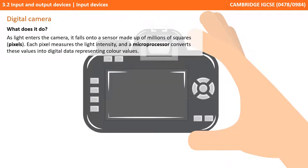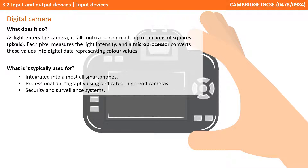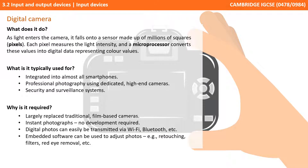Next up, we have digital cameras. As light enters the camera, it falls onto a sensor made up of millions of squares or pixels. Each pixel measures the light intensity, and a microprocessor converts these values into digital data representing colour values. Digital cameras are typically integrated into almost all smartphones, can be used as dedicated high-end cameras for professional photographers, and are also used in many security and surveillance systems. They've largely replaced traditional film-based cameras.